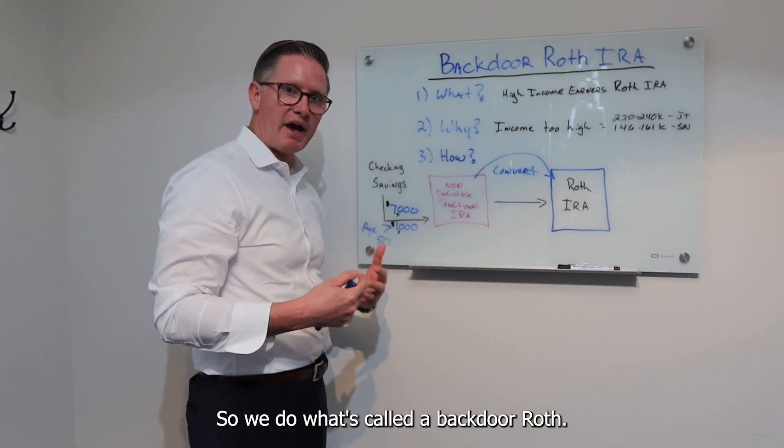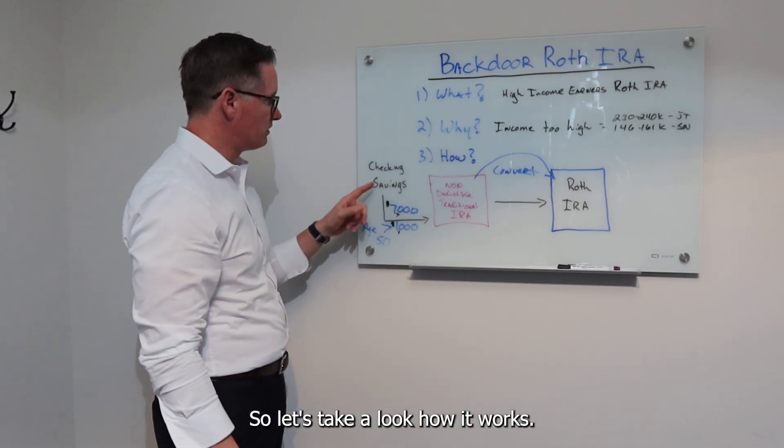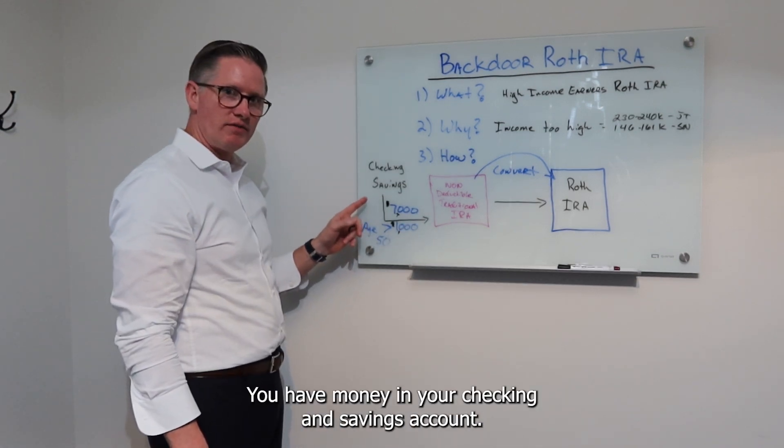So we do what's called a backdoor Roth. Let's take a look at how it works. You have money in your checking and savings account.